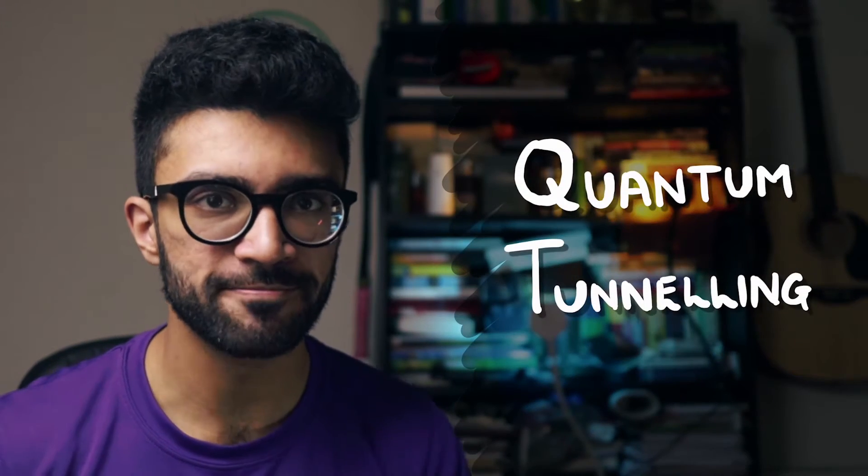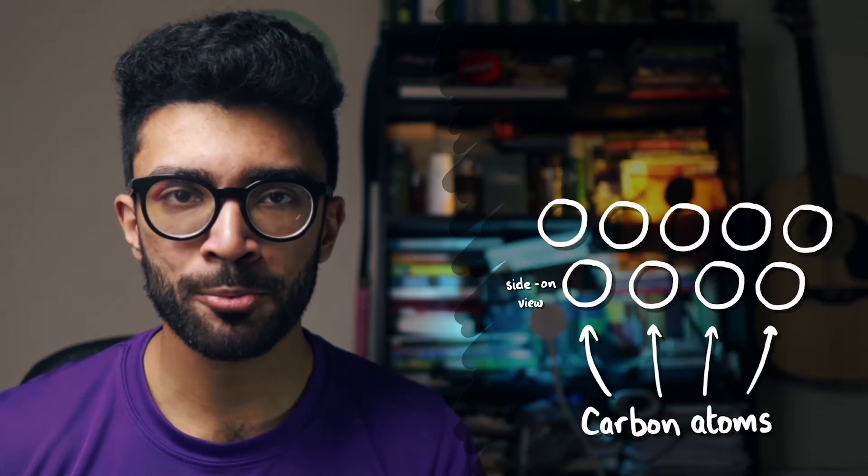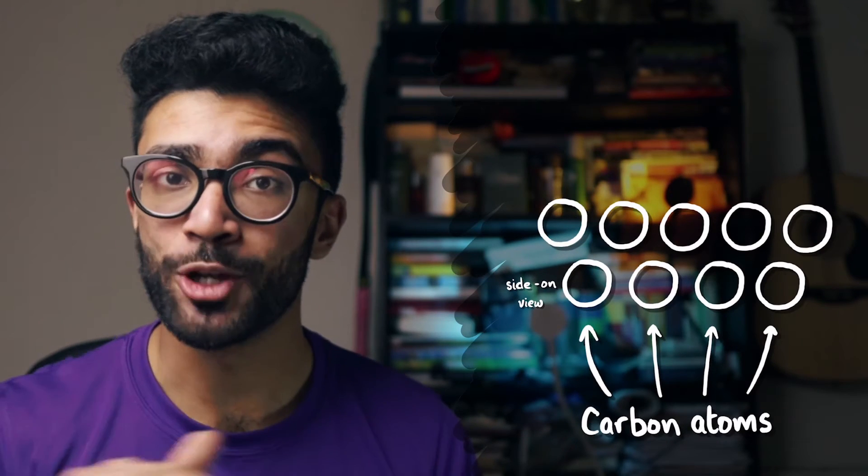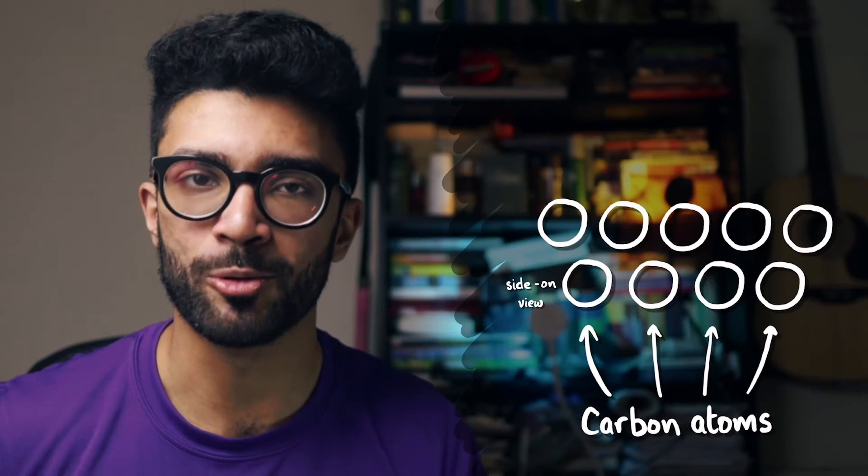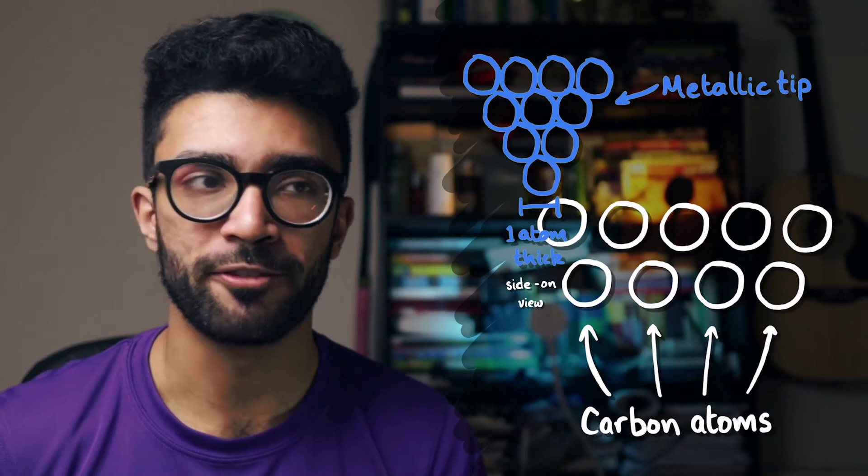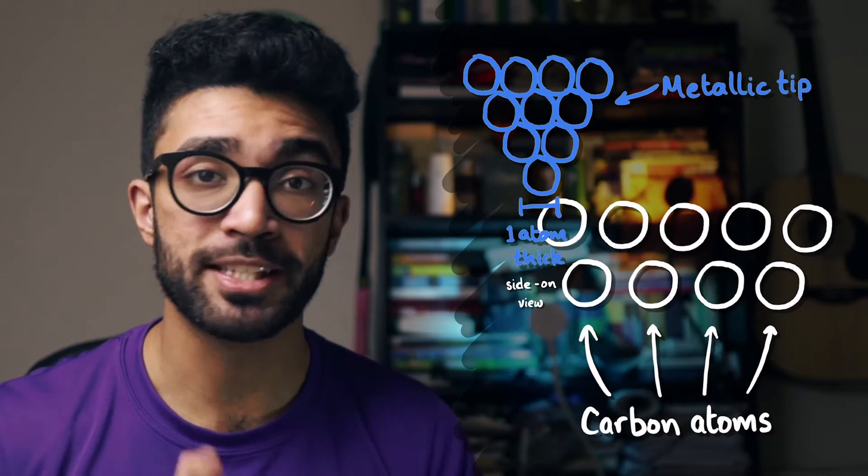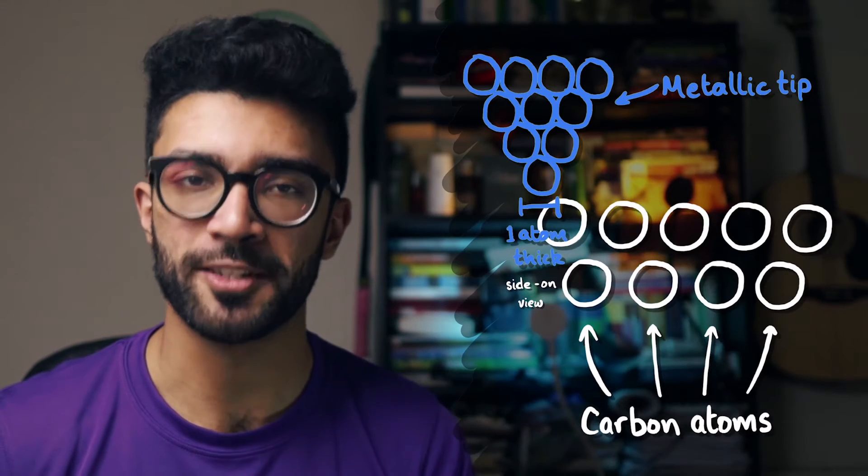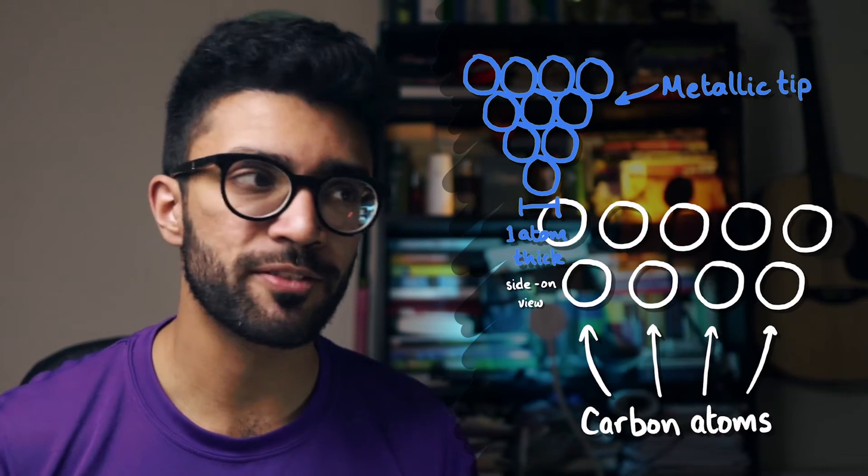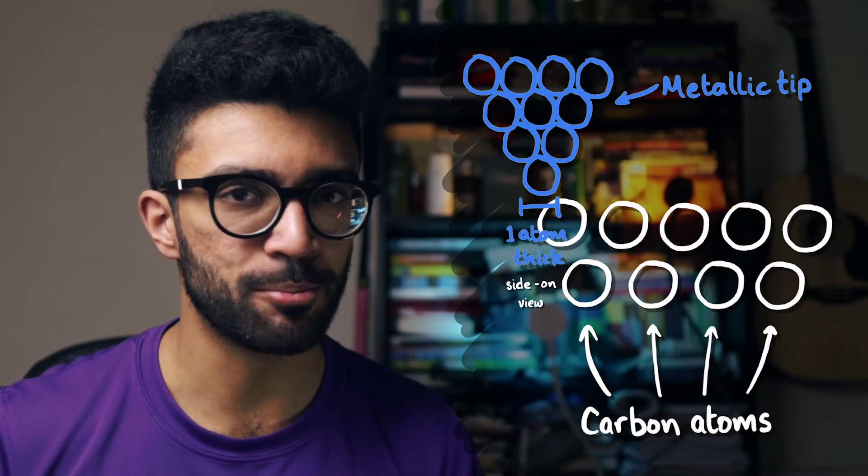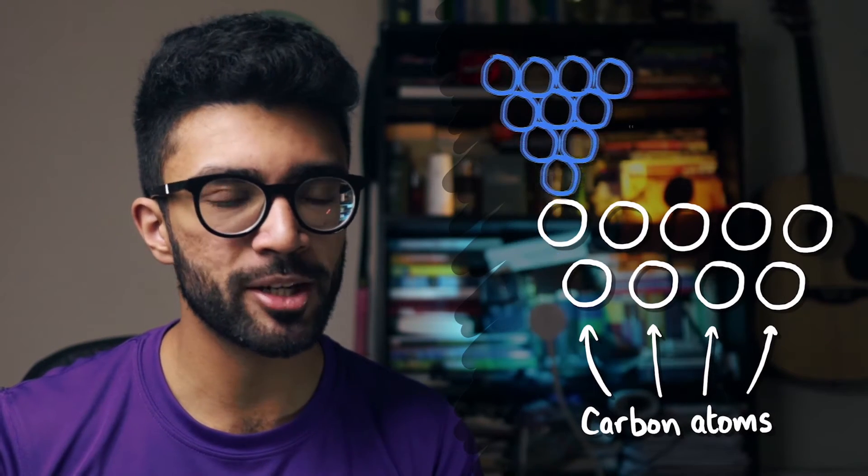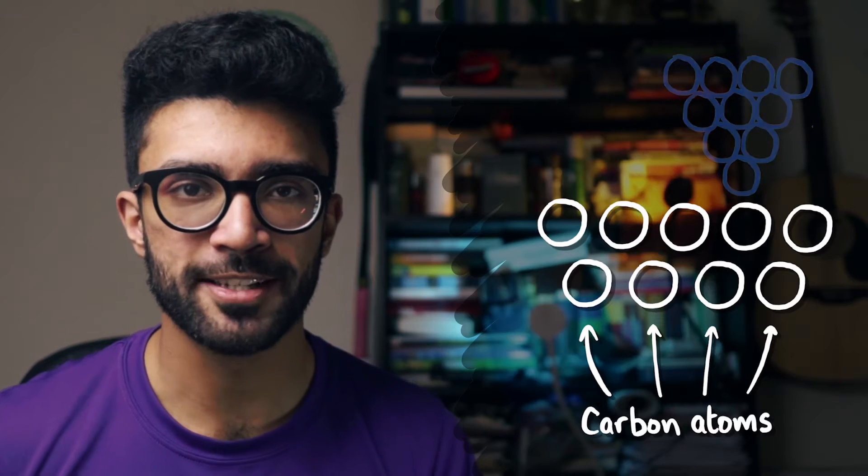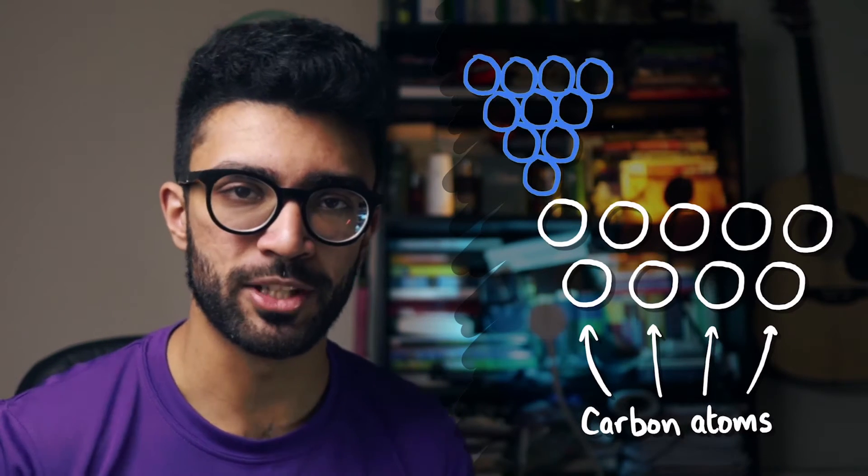Now if we're going to talk about this image we need to understand how an STM works. An STM works on the principle of quantum tunneling. Let's imagine that this is the graphite sample that we put under the microscope. The top layer of circles represents the top layer of carbon atoms that we will be imaging. The STM runs a very fine atomically thin metallic tip close to the surface of our sample. On this scale it looks like a bunch of atoms lumped together but at the bottom it's atomically thin. We're moving it from left to right and this is where quantum tunneling comes into the picture.